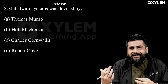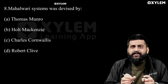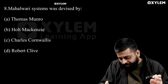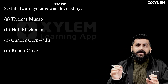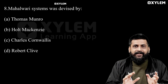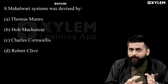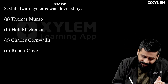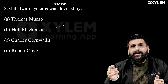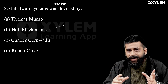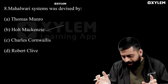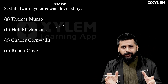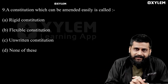One more history-related question: the Mahalwari system was devised by whom? Options include Thomas Munro, Charles Halle Mackenzie, Charles Cornwallis, Robert Clio. The right answer is Halle Mackenzie, who devised the Mahalwari system.